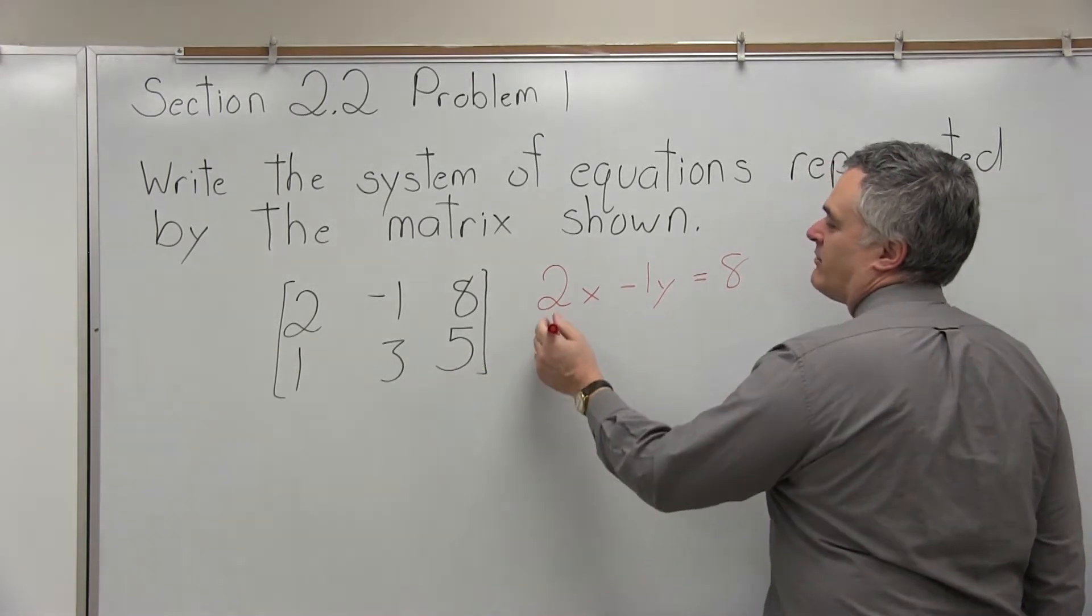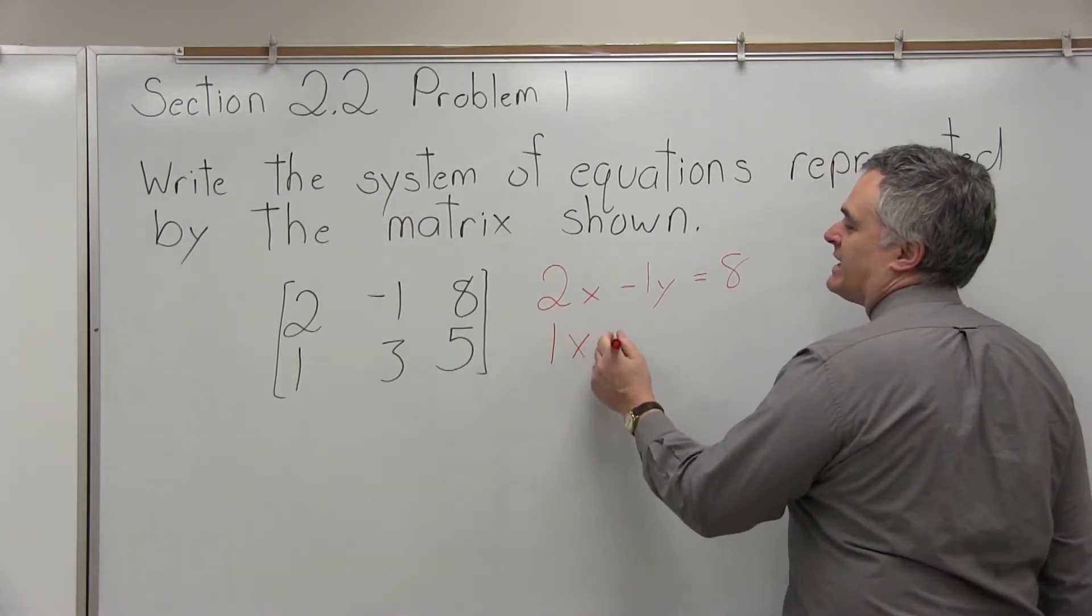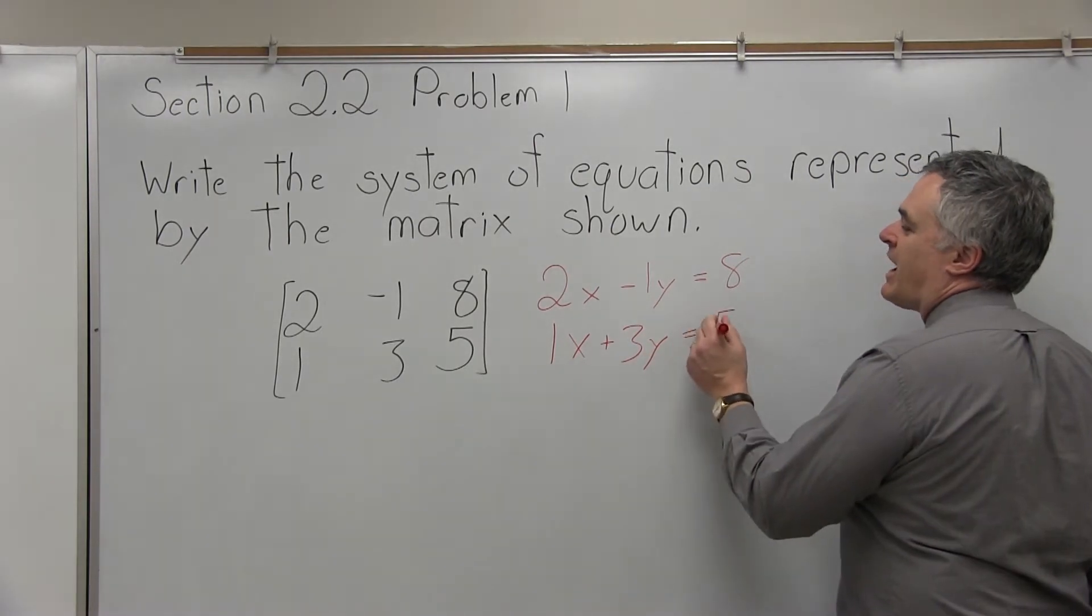And the bottom row, 1, 3, 5, represents the equation 1x plus 3y equals 5.